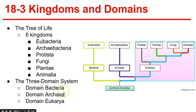The domain Bacteria: these organisms are unicellular and prokaryotic. They have thick, rigid walls that surround a cell membrane, and these walls contain a substance known as peptidoglycan. This domain corresponds to the kingdom Eubacteria and is ecologically very diverse.